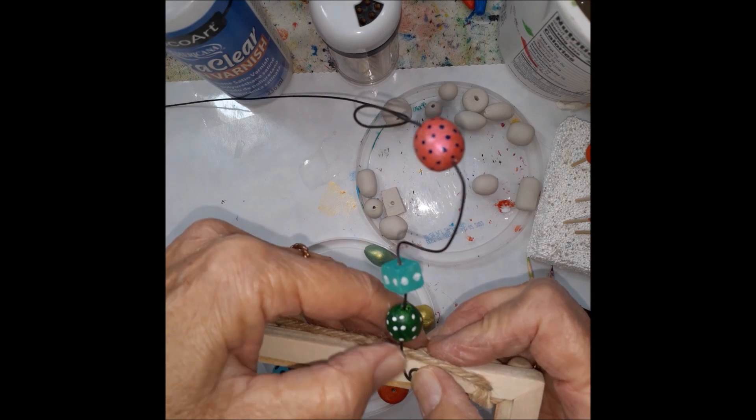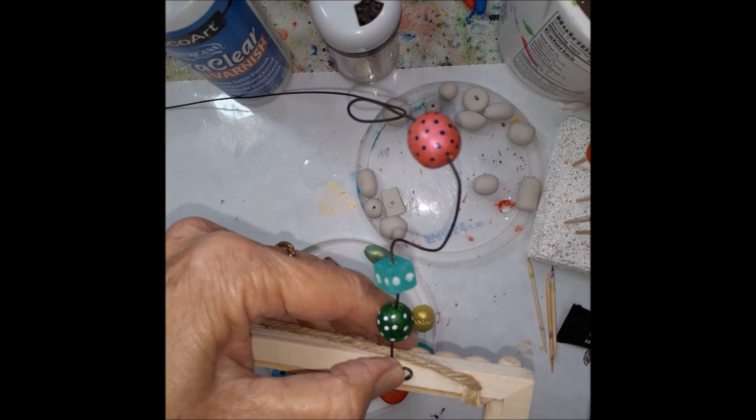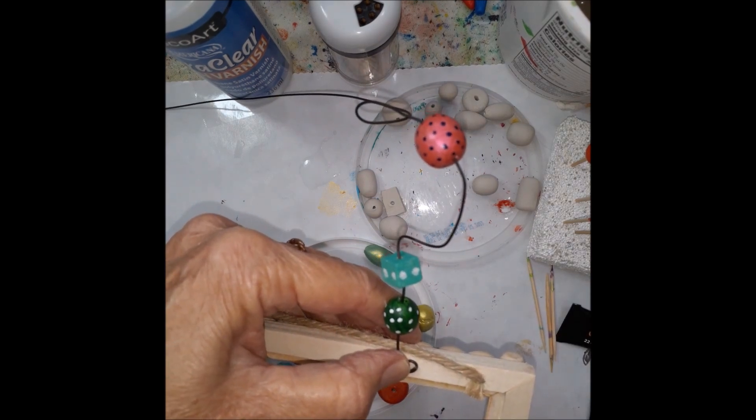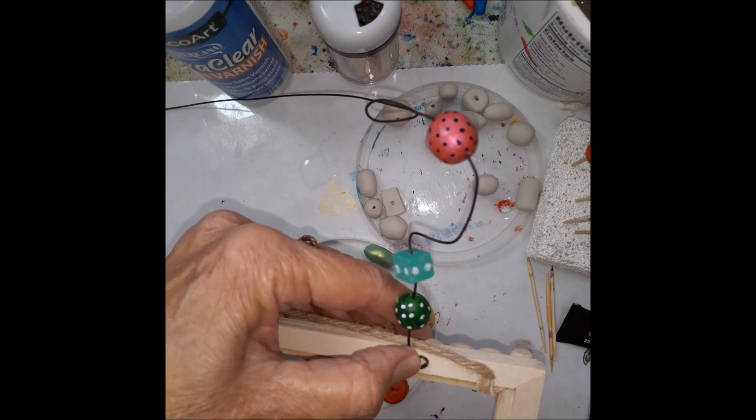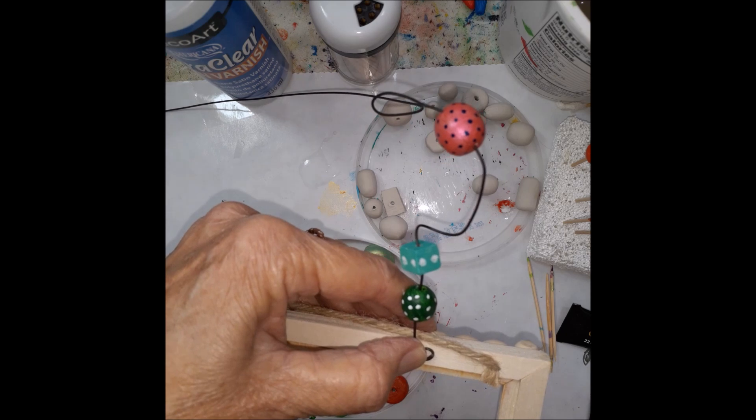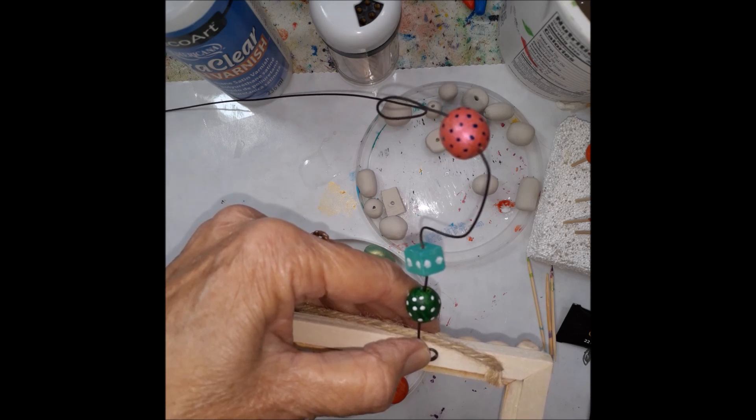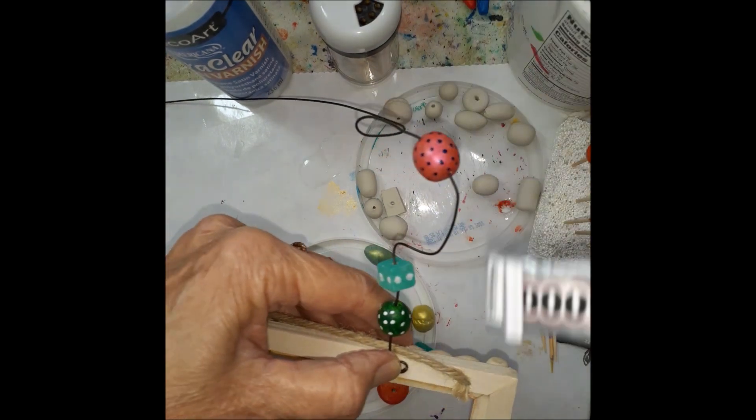Once you attach that to anything, it will stick like cement. Or you could put a strong glue like E6000, which is a jewelry glue, comes in tubes like this.